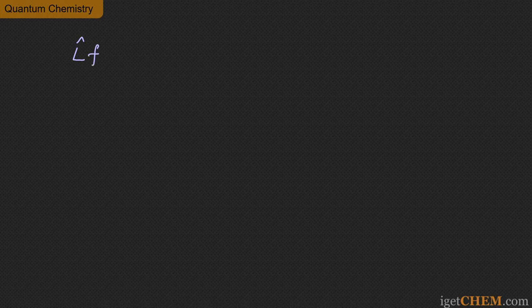In the last video we talked about what an operator is and furthermore what a linear operator is. Let's imagine that you have a linear operator — we'll just call that L. When that linear operator is applied to a function f, where f is understood to be a function of x, the linear operator applies a linear operation on that function f.